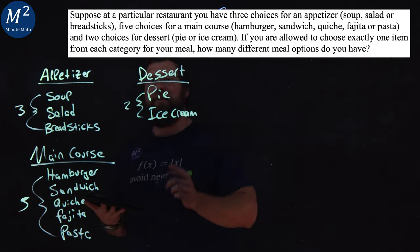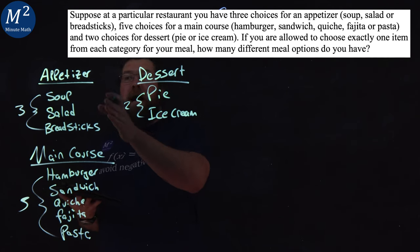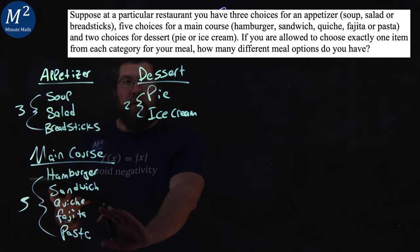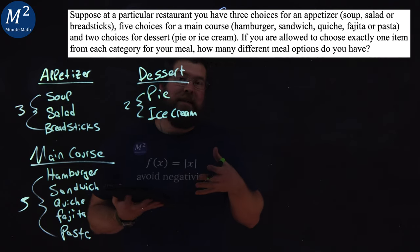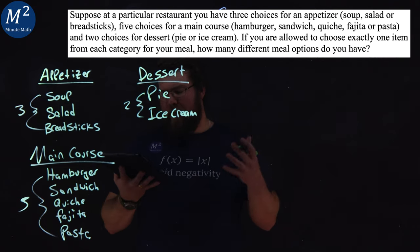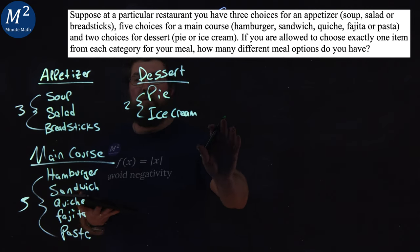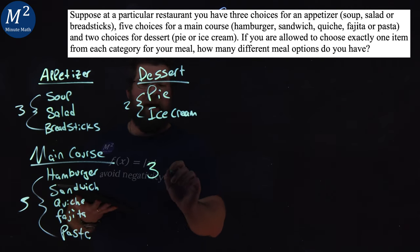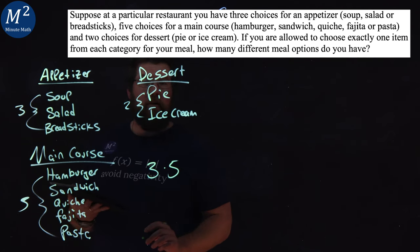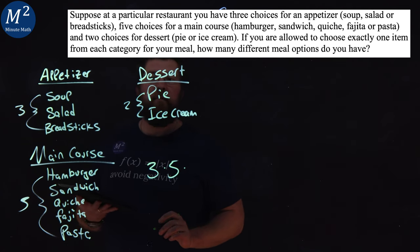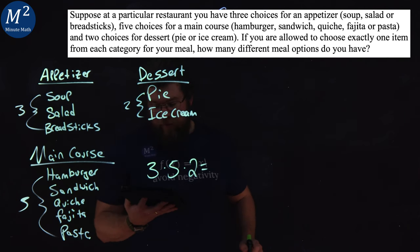Let me know in the comments which combo you like. Anyway, since we have three options for appetizers, five options for the main course, and two options for the dessert, we need to figure out how many total combinations we have. We actually multiply each group.